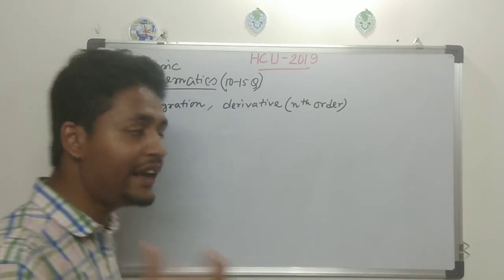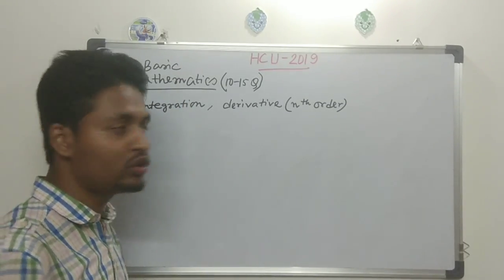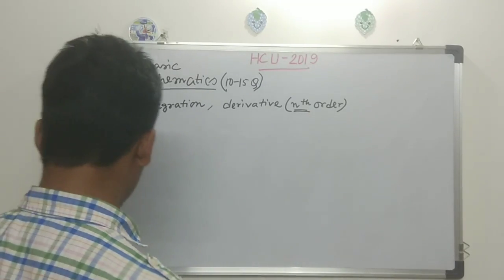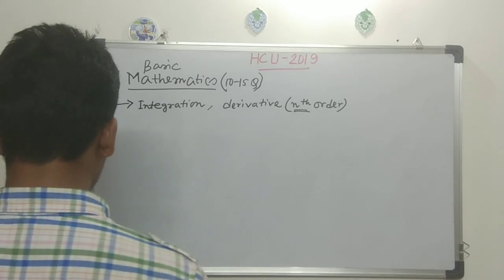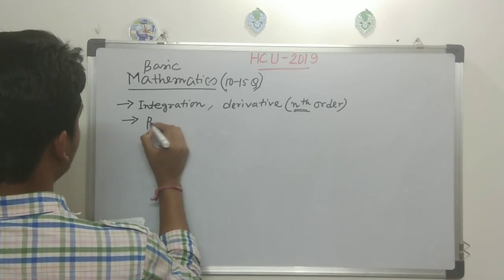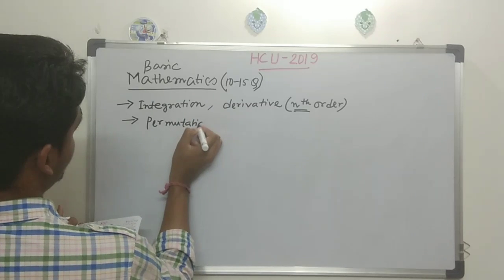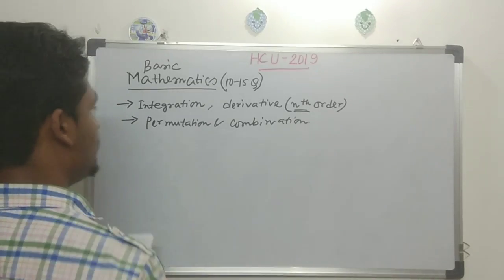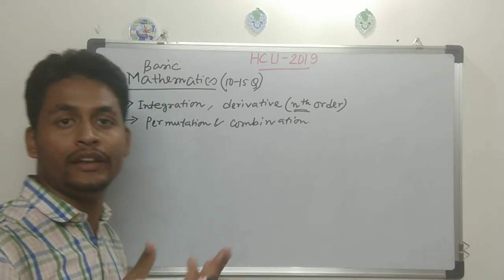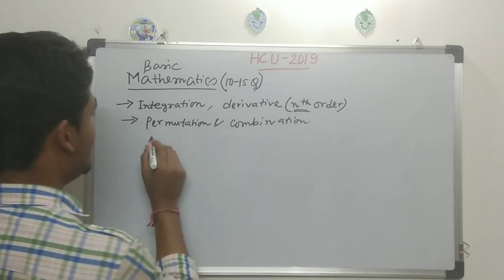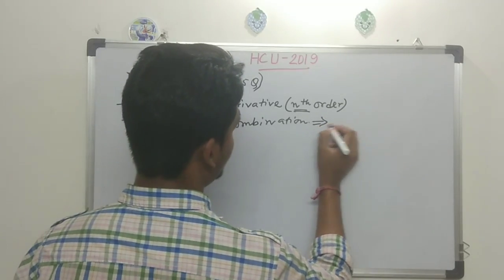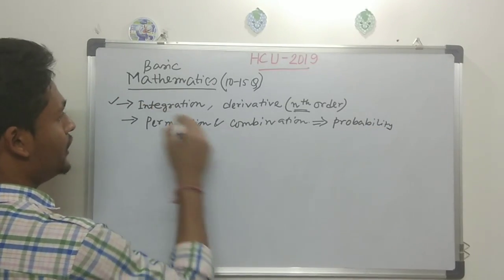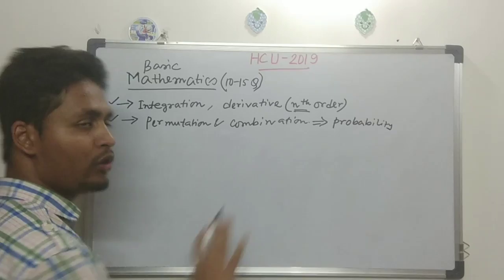Derivatives — and very important is the nth order derivative of a function. You also need to know some permutation and combination. This is important — for example, if we choose something, how many ways is it possible? These three topics are very much correlated with probability, so integration, permutation/combination, and probability are all connected.